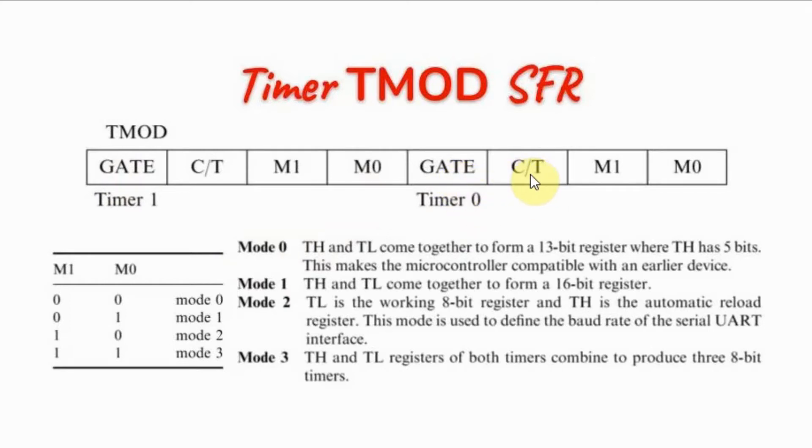CRT means counter or timer. A value of 0 means timer, a value of 1 means counter. These two bits determine the mode of the timer. We have four modes. In this video, we will focus on mode 1, where timer is used as a 16-bit timer.